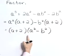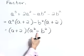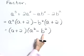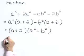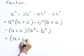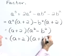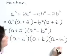Now we've got a good factored form here, but it's not completely factored because we have a difference of squares in this second parenthesis. Let's factor it. Our completely factored form is a plus 2 times a plus b times a minus b.